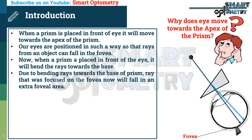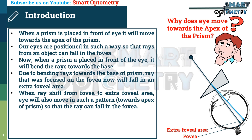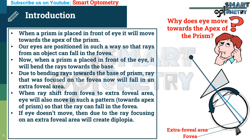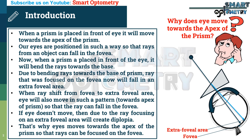Due to bending of rays towards the base of the prism, a ray that was focused on the fovea will now fall on an extrafoveal area. When rays shift from the fovea to an extrafoveal area, the eye will also move towards the apex of the prism so that the ray can fall on the fovea. If the eye doesn't move, the ray focusing on an extrafoveal area will create diplopia. That's why the eye moves towards the apex of the prism so that rays can be focused on the fovea.